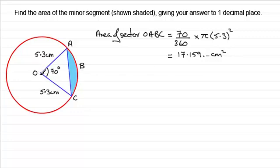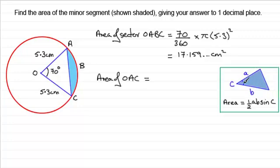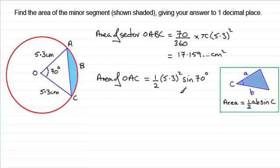Now we need to work out the area of triangle OAC. We have two sides and an included angle, and you should be familiar with this formula: area equals one half times a times b times sine C. So the area of triangle OAC equals one half times 5.3 times 5.3 — or 5.3 squared — multiplied by sine of 70 degrees. Working this out gives 13.197 centimeters squared.